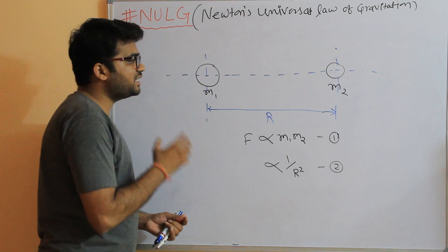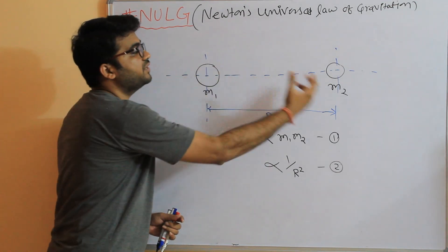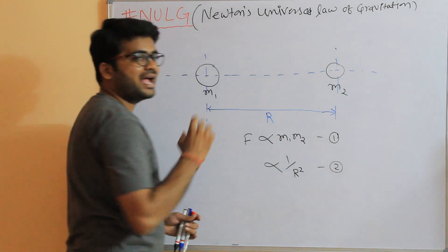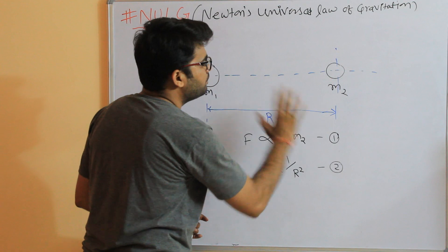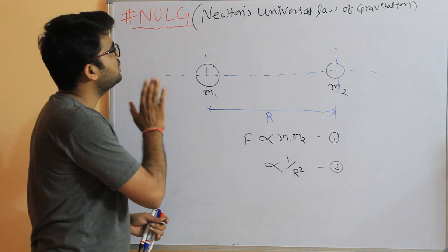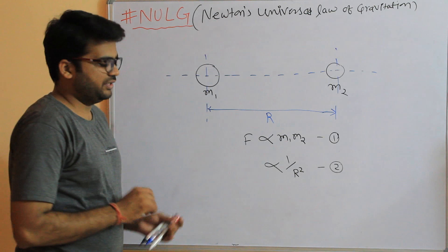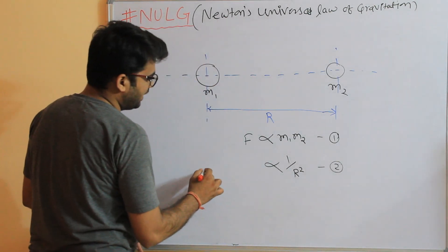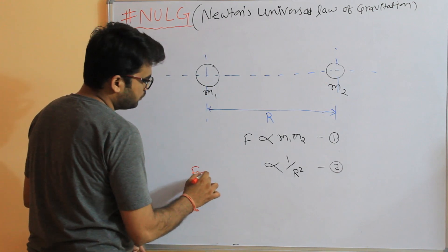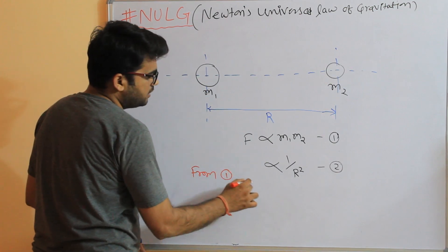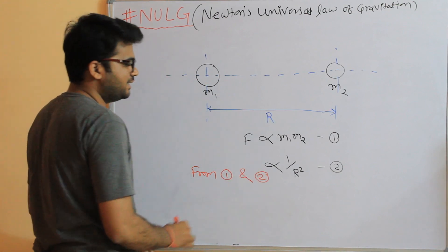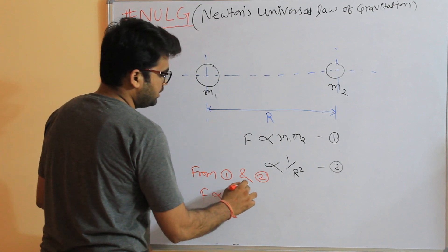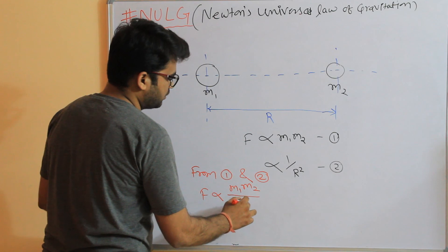So every object in this universe attracts every other object with a force which is directly proportional to the product of their masses and inversely proportional to the square of the distance between them. This is the statement of Newton's Universal Law of Gravitation. Combining equations 1 and 2, we can write F is directly proportional to M1·M2 divided by R².